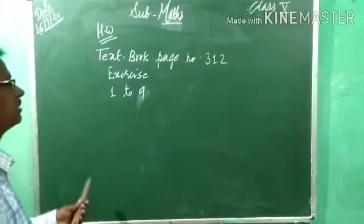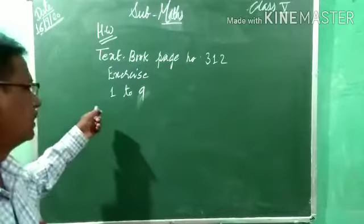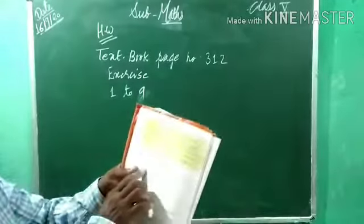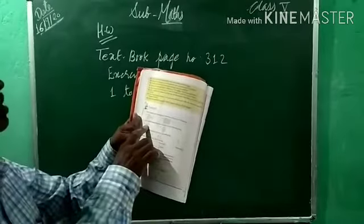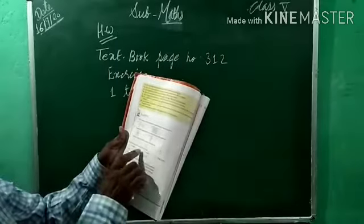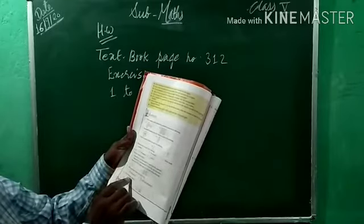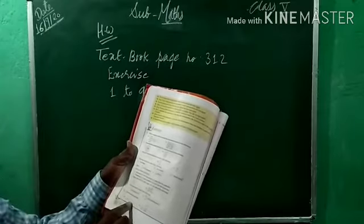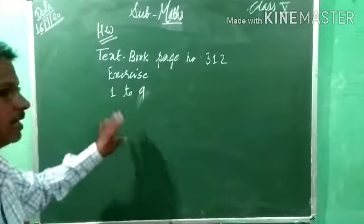Today's homework: page number 312, Exercise 1 to 9. I have already solved some examples. For each question, the one I explained is done — you have to complete the other part. Question 1: do B. Question 2: do A. Questions 3 to 8: do B. Question 9: do A. Complete questions 1 to 9 as homework. Thank you.